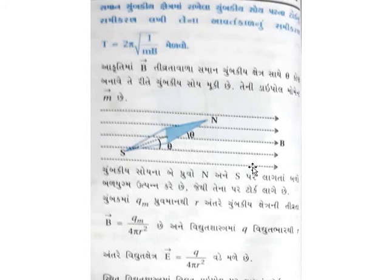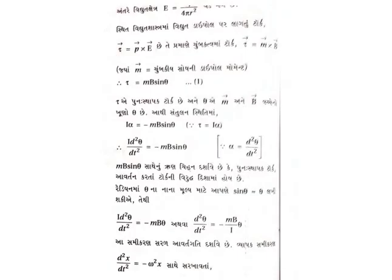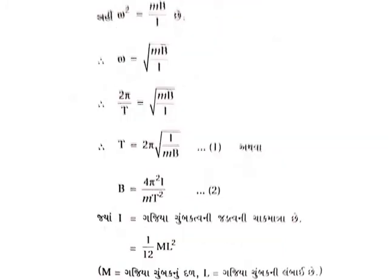So the torque: tau equals m × B, and from this we derive the equation. We write I into alpha, which gives us the equation of motion. Comparing with the standard SHM equation, we get the time period formula. This is how we derive the equation for oscillation of a magnetic dipole.